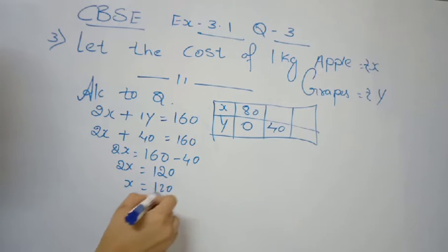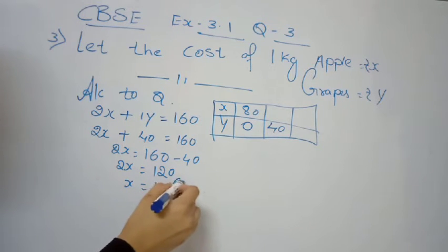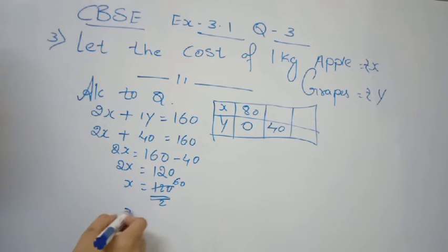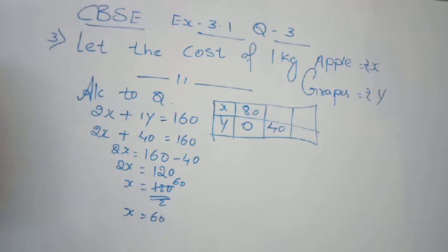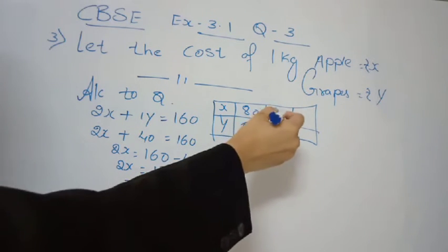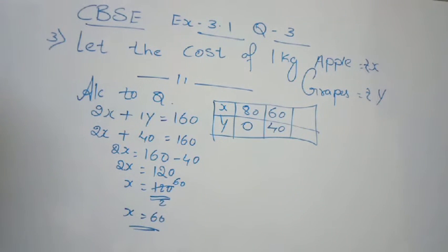When y equals 40, substituting into the equation: 2x plus 40 equals 160, so 2x equals 120. Therefore x equals 120 divided by 2, which gives x equal to 60. So when y is 40, x is 60 rupees.